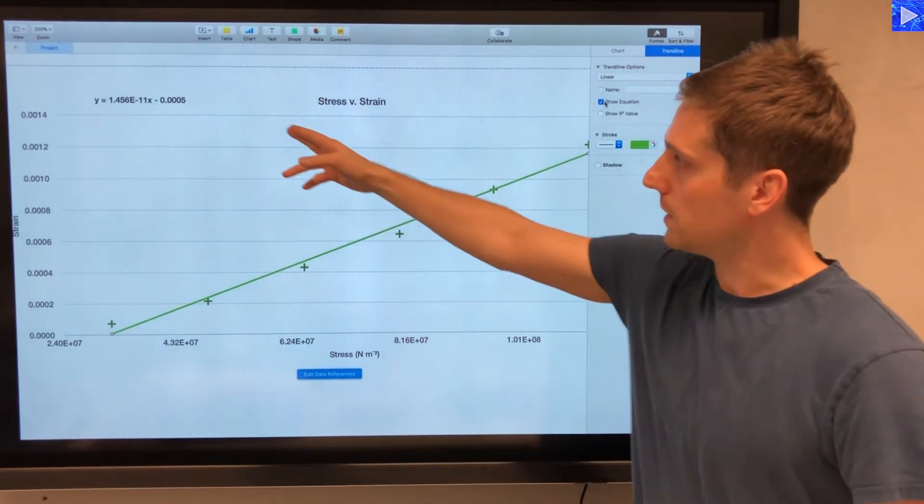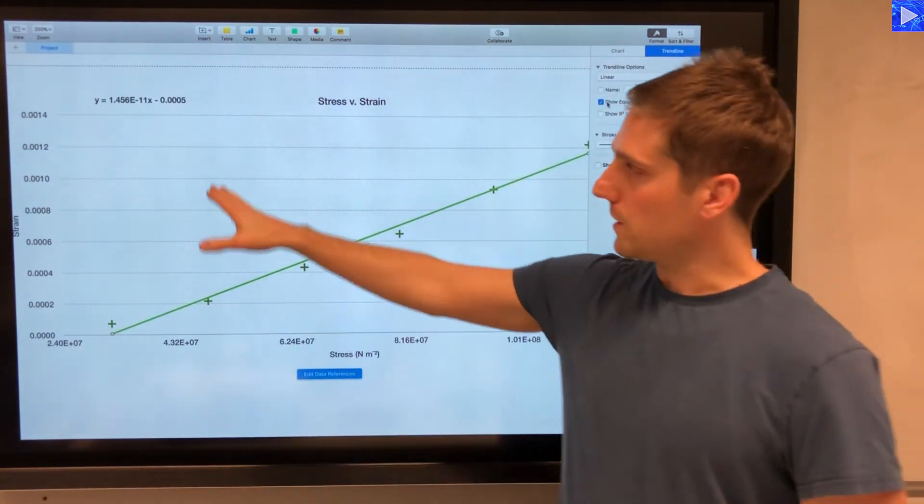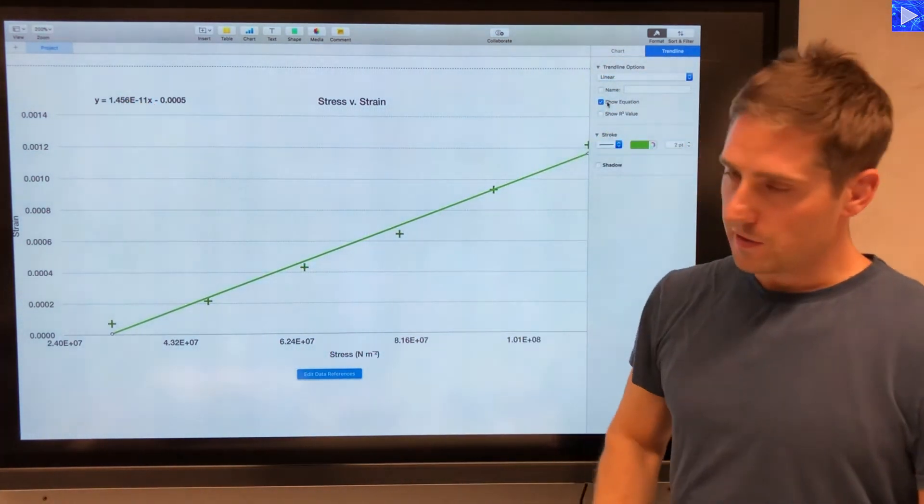So if I untick that and tick that again, you can see that the equation is disappearing. So if I untick that and tick that, so you can see that is the equation for this line here.